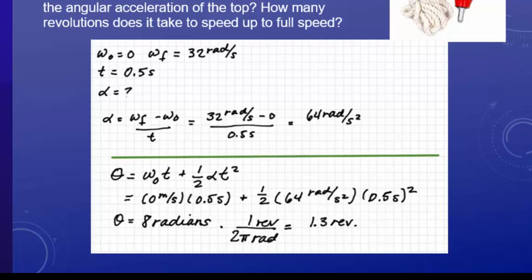The omega naught, the initial angular velocity, is zero, so that piece falls out. If you do the math, you end up with the angle being eight radians.